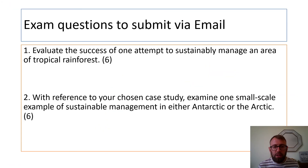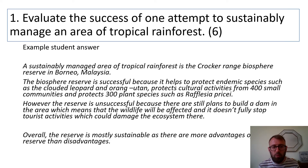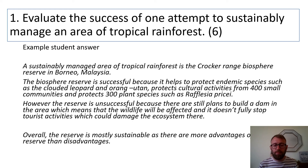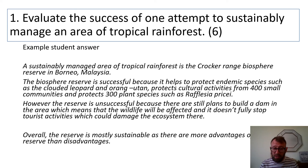Now for the exam questions — these need to be submitted via email, and a lot of the same mistakes are being made. Here's an example of an exam answer sent by one student: 'A sustainably managed area of tropical rainforest is the Crocker Range Biosphere Reserve in Borneo, Malaysia. The reserve is successful because it helps protect endemic species such as the cloud leopard and orangutan, and protects cultural activities of 400 small communities and 300 plant species.' Fantastic — really good place-specific detail. However, it's missing a key thing: there's no explanation of why this makes it sustainable. Then it says the reserve is unsuccessful because there are still plans to build a dam, which means wildlife will be affected, and it doesn't fully stop tourist activities which could damage the ecosystem. These ideas are there but not developed fully, and the place detail is lacking.